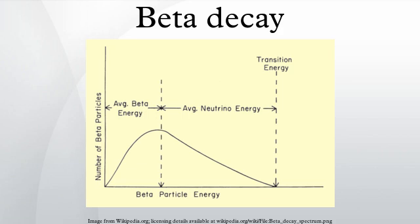Beta decay is mediated by the weak force. There are two types of beta decay, known as beta minus and beta plus. Beta minus decay produces an electron and electron antineutrino, while beta plus decay produces a positron and electron neutrino. Beta plus decay is thus also known as positron emission.